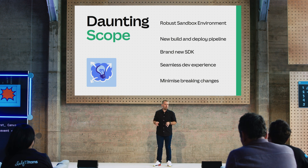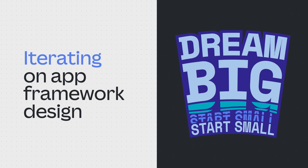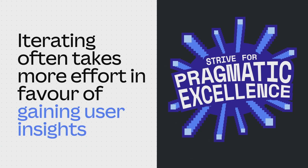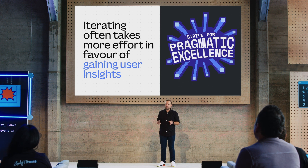Delivering everything at once meant it would take a very long time before we could get anything to our app developers. So we decided to dream big and start small by iterating on the app framework over a period of a year. This ensured that we could get something into our developers' hands early and get that valuable feedback. We knew this iterative approach would cost us a lot of development effort, but that was okay because we would learn as we go.